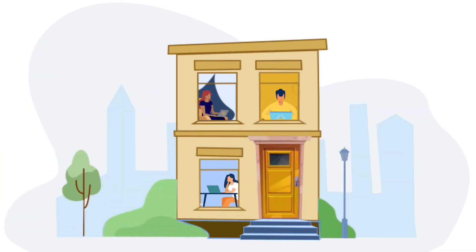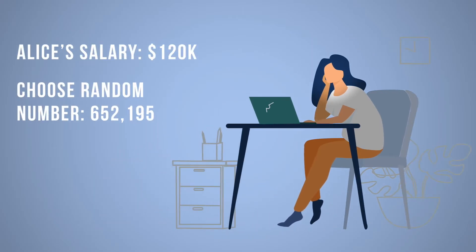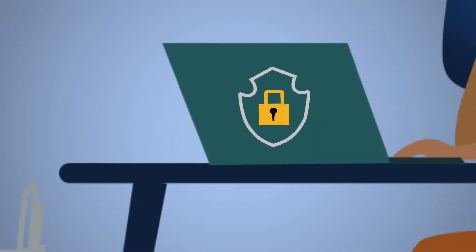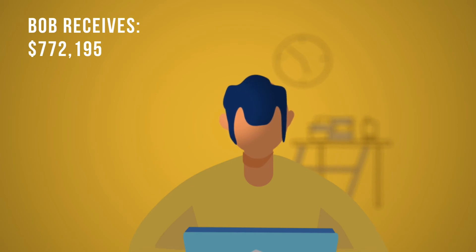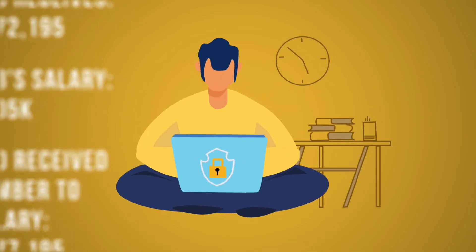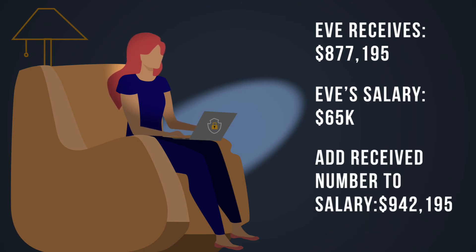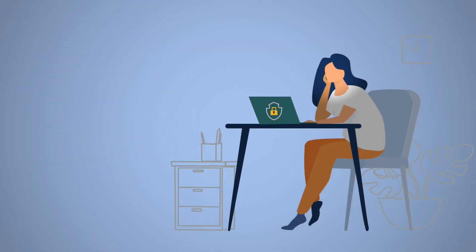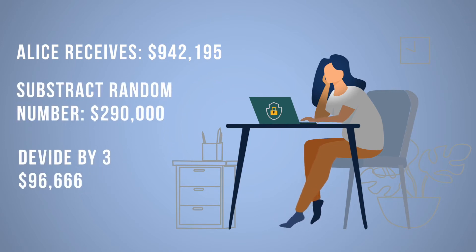So we have Alice, Bob, and Eve — three cryptographers who want to work out their average salary. Alice takes her salary, adds a really large random number to it, and sends it to Bob. Bob gets this number, which reveals nothing about Alice's salary. Bob adds his own salary and sends it to Eve, who adds her salary and sends it back to Alice. Alice subtracts the large random number, and what she has is the sum of the three salaries. Divide by three, you get the average — and nobody learned anything but the result.